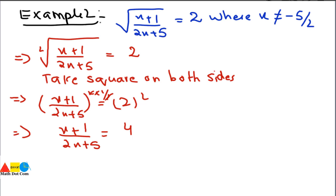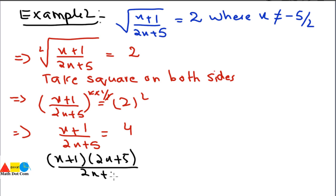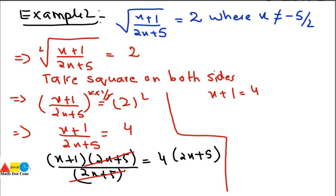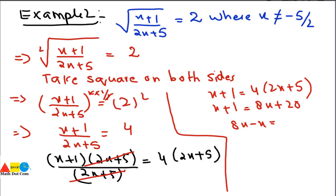We multiply both sides by (2x + 5): (x + 1)(2x + 5) / (2x + 5) = 4(2x + 5). The (2x + 5) cancels, leaving x + 1 = 4(2x + 5), which expands to x + 1 = 8x + 20. Combining like terms: 8x - x = 1 - 20, so 7x = -19, giving x = -19/7.